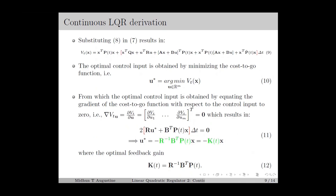In dynamic programming, the optimal control input at each time instant is computed by minimizing the cost-to-go function. So u* is the minimizer of v_t(x). Using the first-order condition for optimality, we find the optimal control input by setting the gradient of the cost-to-go function with respect to the control input to zero. Taking this gradient and setting it to zero gives: 2R*u* + B^T*p(t)*x * delta_t = 0. Solving for the control input gives u* = -R^{-1} * B^T * p(t) * x, which we rewrite as -k(t)*x. The expression for the optimal feedback gain is given in equation 12 and is a time-varying gain. To find the optimal control input, we need the weighting matrix p(t), which is discussed next.